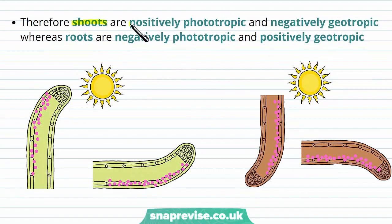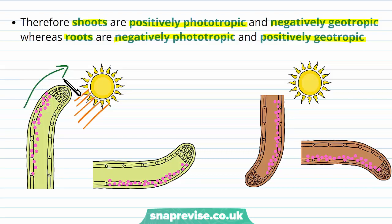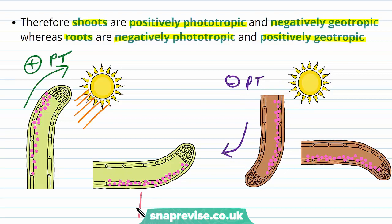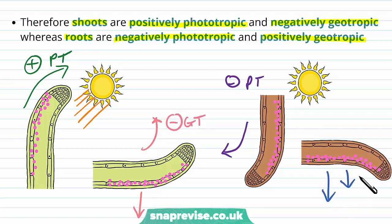So shoots have positive phototropism and negative geotropism, whereas roots have negative phototropism and positive geotropism. The sunlight causes the shoot to bend towards the sun — positive phototropism — whereas the roots bend away from the sun — negative phototropism. Gravity causes shoots to grow in the opposite direction — negative geotropism — whereas roots grow with gravity — positive geotropism. The tropism refers to the stimulus, and the directions of shoots and roots tend to be opposite.